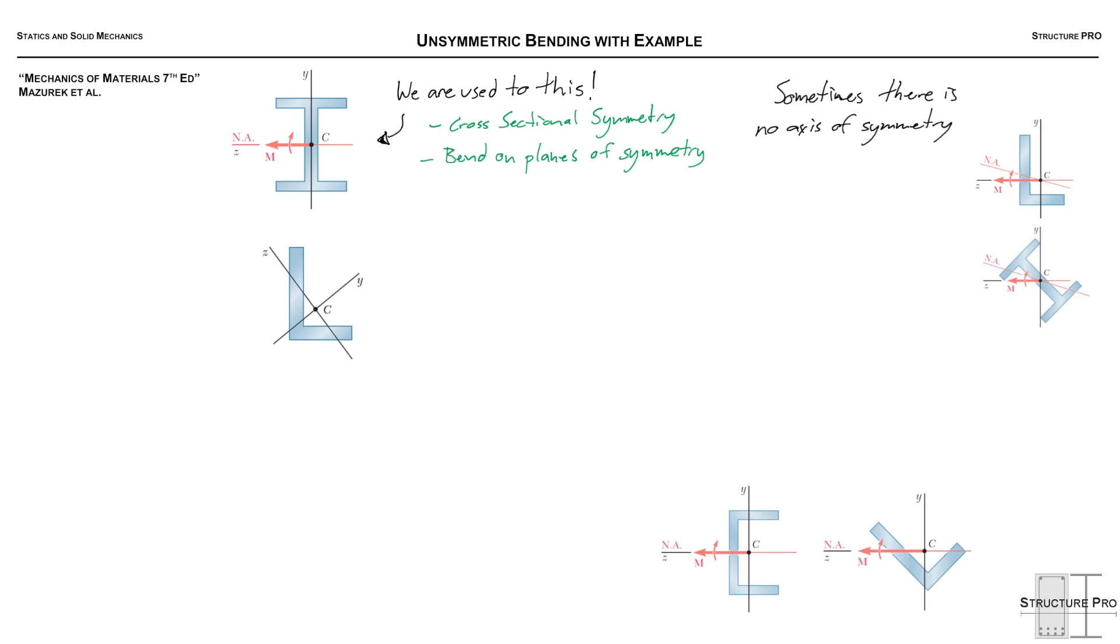So that means things get a little tricky. For example, with this angle or this L-shaped section here. Or there is an axis of symmetry, but bending is applied on a different axis. So it's not being applied in the axis of symmetry, which means things get weird, things get messy. And in both these cases, you can see that the bending and the neutral axis, everything is just kind of wonky. So unsymmetric bending is the result.